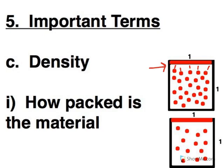In the lower box where there are fewer units of mass, it's more spread out. That is a low density.